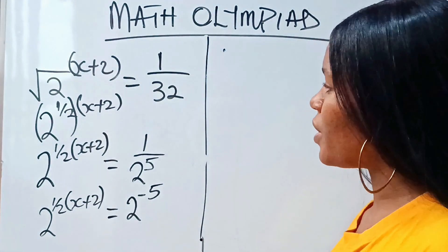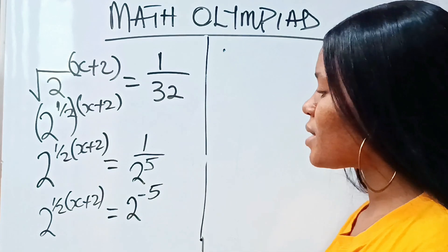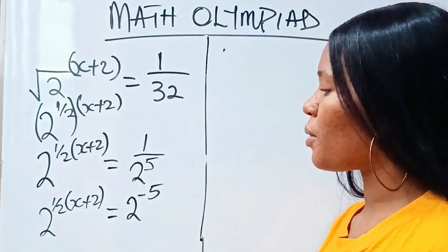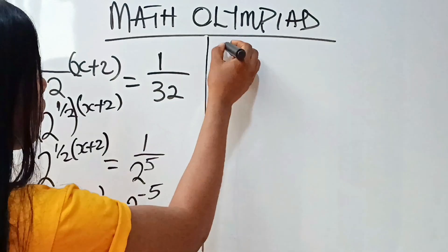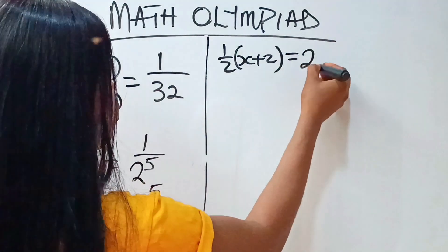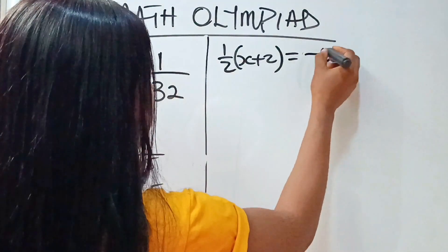Now, at this point, notice that they are already on the same base. So that means the powers are equal. Once the bases are equal, the powers are equal. That means we can now write that half bracket x plus 2 is equal to minus 5.